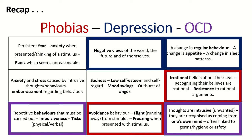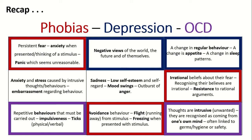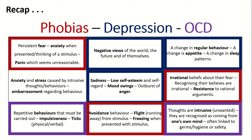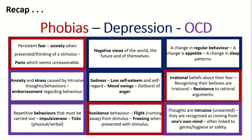For emotional characteristics: phobias involve persistent fear and anxiety when presented with, or thinking about, a stimulus — or panic. For depression it's sadness, low self-esteem, mood swings, and maybe outbursts of anger. For obsessive compulsive disorder, the emotional characteristics are anxiety and stress caused by intrusive thoughts, behaviours, and potentially embarrassment.